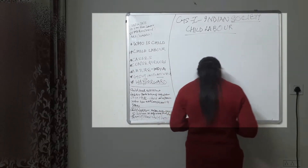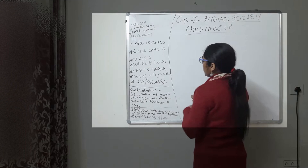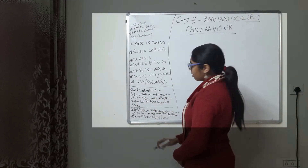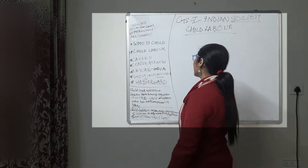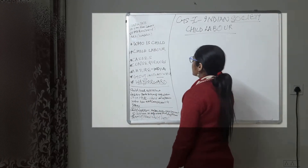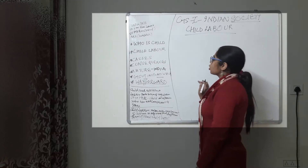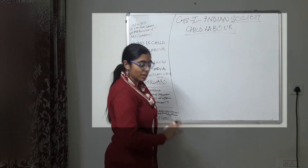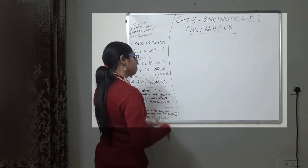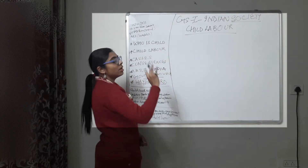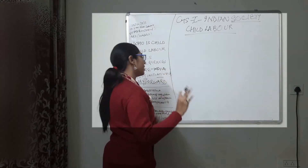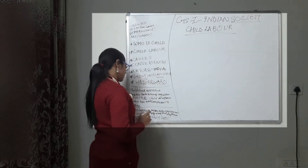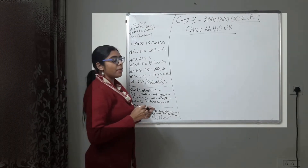Who is a child? The Child and Adolescent Labour Prohibition and Regulation Act of 1986 defines a child as a person who has not completed the age of 14 years. So if you have not completed 14 years of age, according to this act, you are a child.